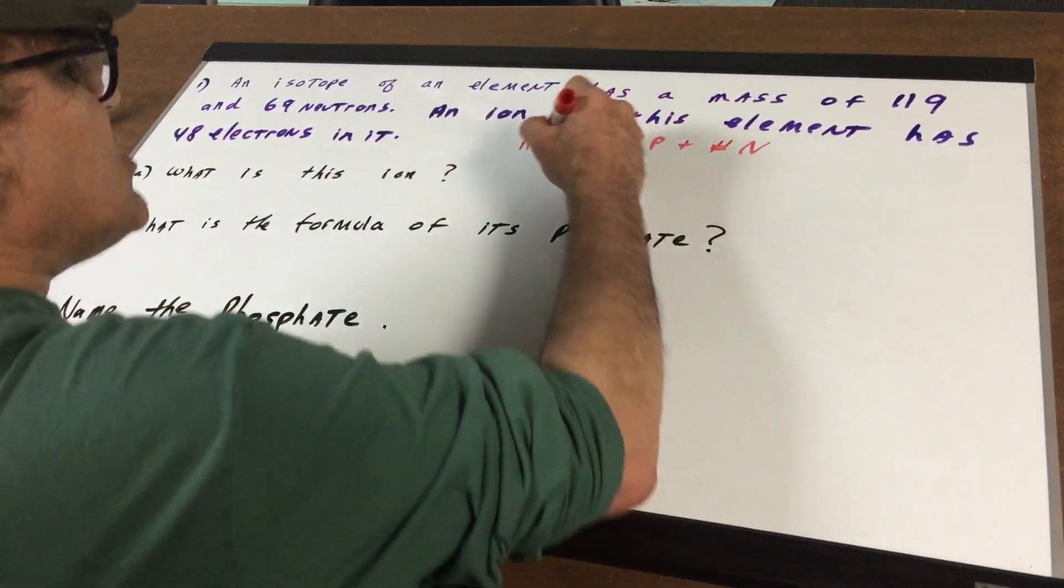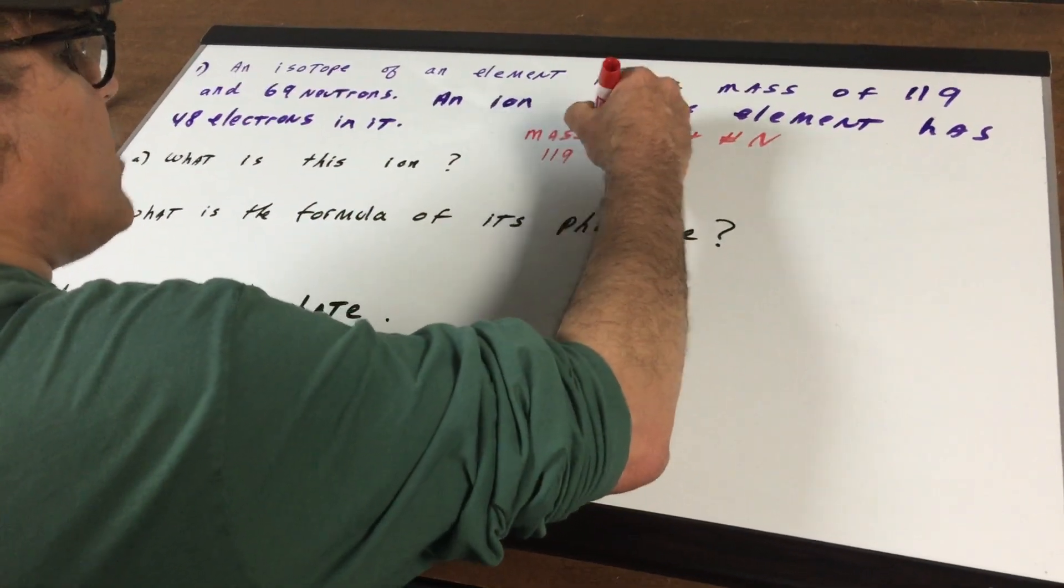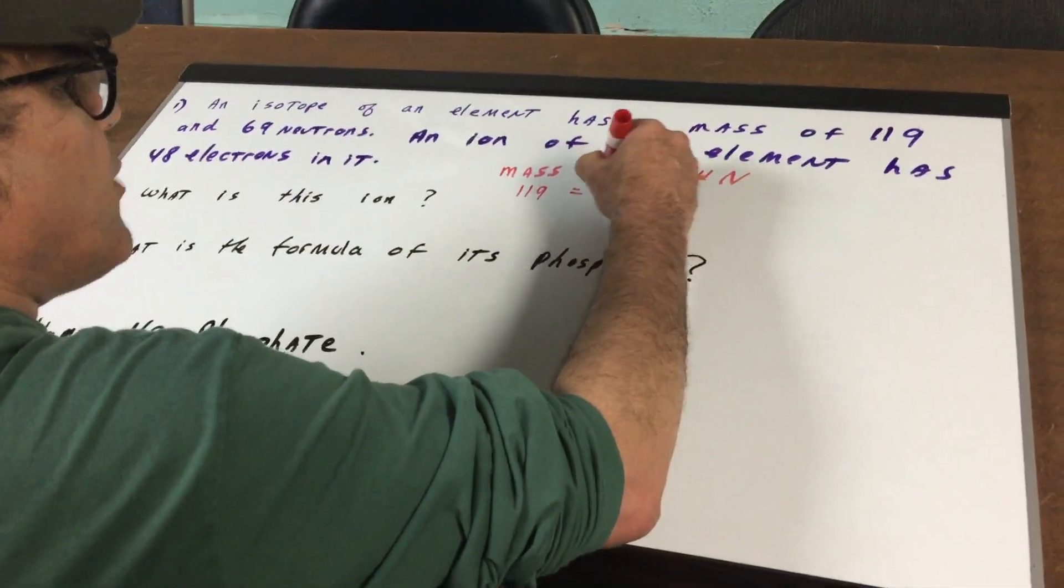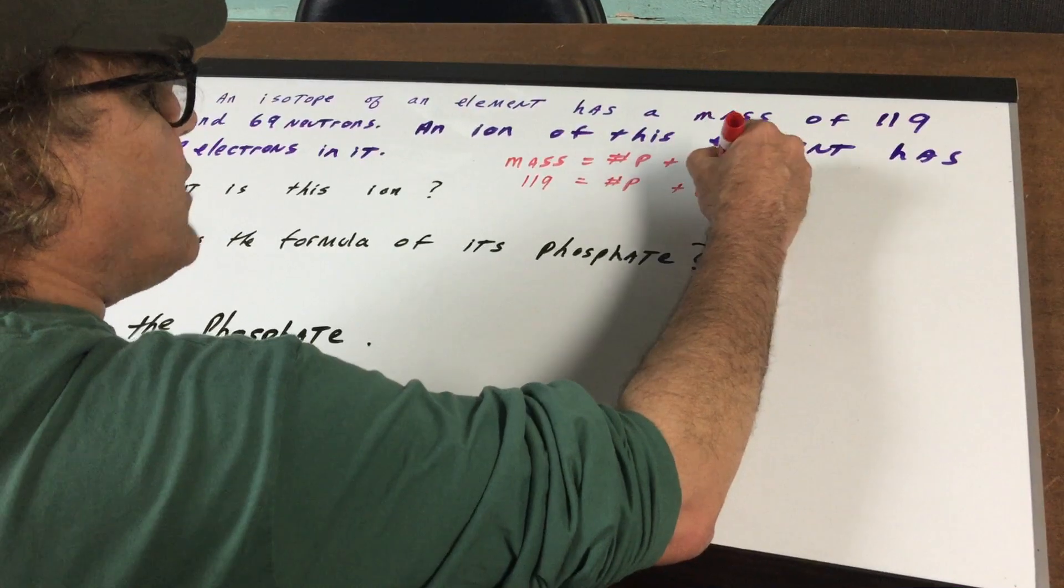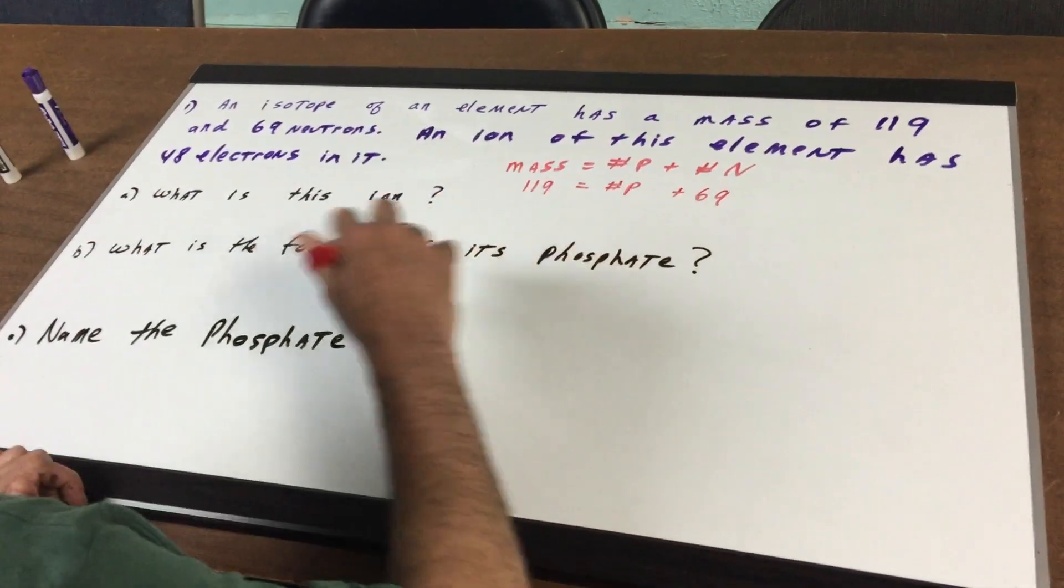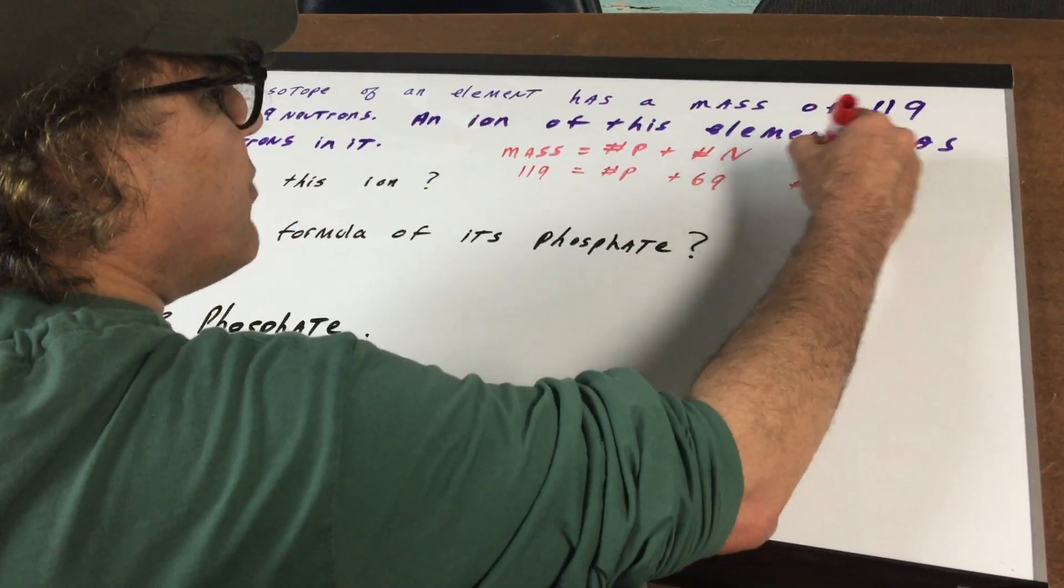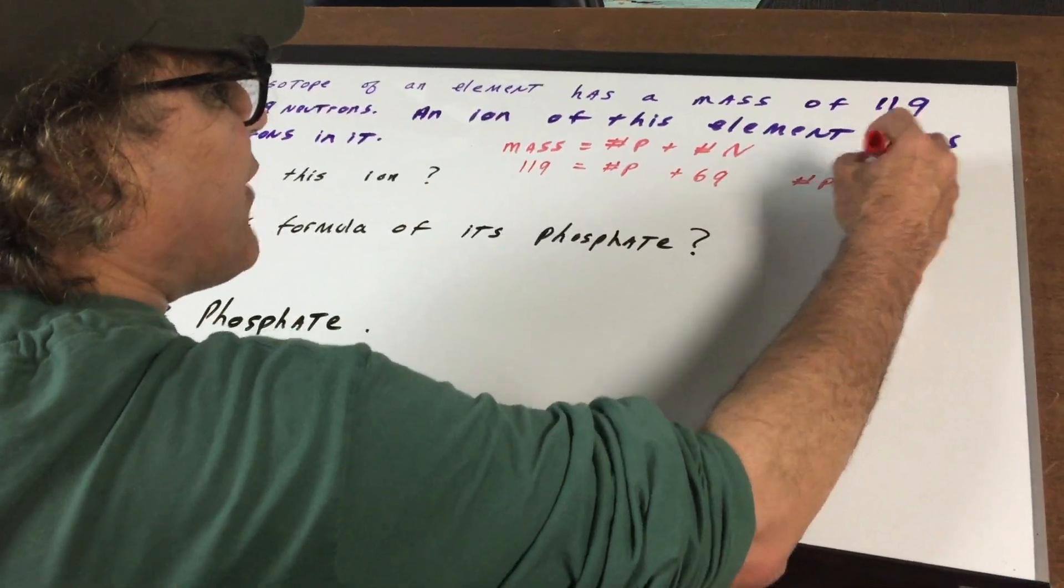The mass is 119 so I'm going to put in 119. We don't know the number of protons. The number of neutrons is 69 and when I subtract 69 from 119 we get the number of protons is 50.